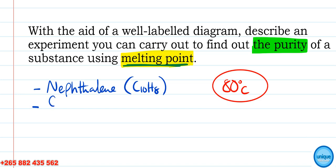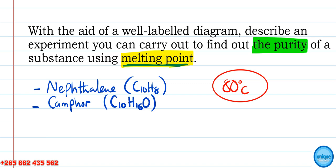You're also going to need another substance to make the naphthalene impure. This substance is camphor, with the chemical formula C10H16O — an organic compound containing carbon, hydrogen, and oxygen.